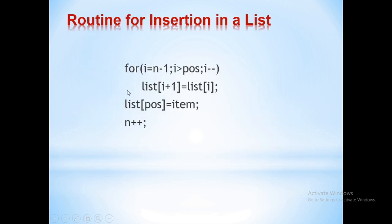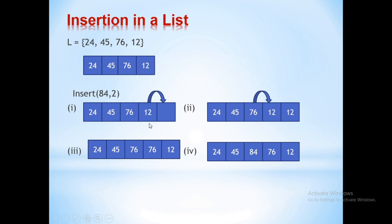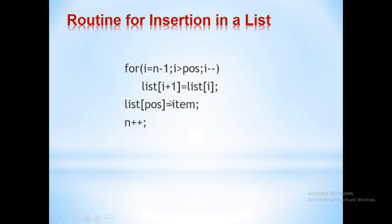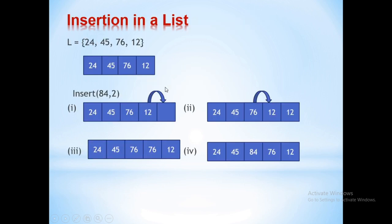Let us see how to implement this list using a C program. The element at position n minus one has to be copied to the next location. The array index starts from n minus one and moves up to pos, which is the position at which the new element is to be inserted. Every time, the element at the i-th location is copied to the i plus one location.